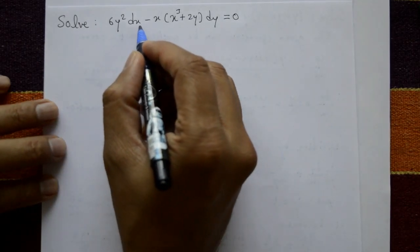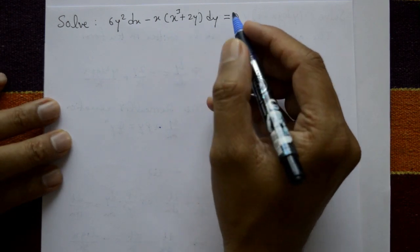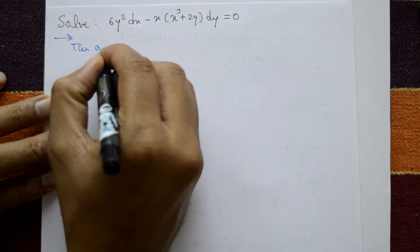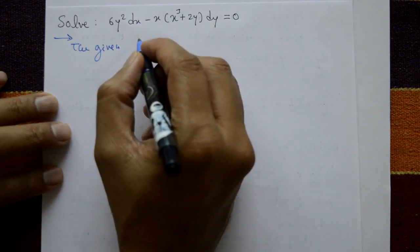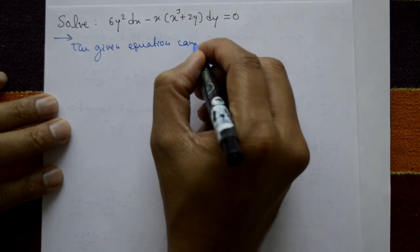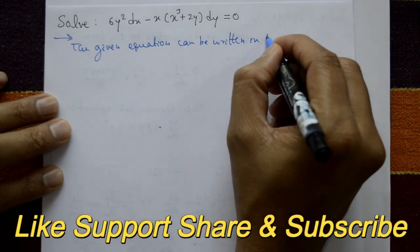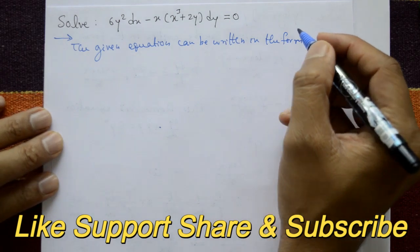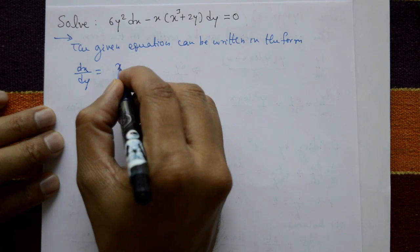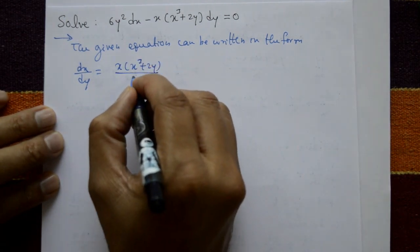Solve 6y squared dx minus x into bracket x cubed plus 2y dy equal to 0. The given equation can be written in the form dx by dy equals x into (x cubed plus 2y) divided by 6y squared.